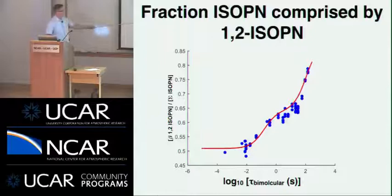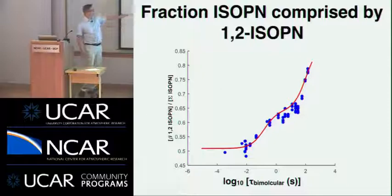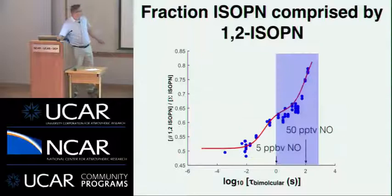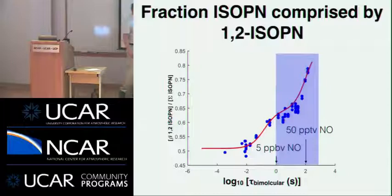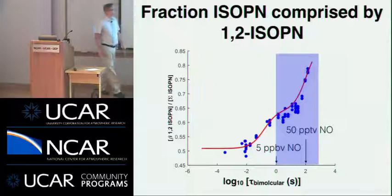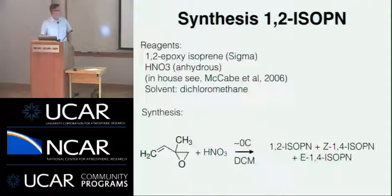This data from the RO2 experiments shows the fraction of the beta-1,2 isoprene nitrate over the total as a function of RO2 lifetime. In the atmosphere, we're living in the region where the beta-1,2 isoprene nitrate is always a large fraction — more than 65% of the isoprene nitrates being made — and at the long end it's up to 80 or 90%. So if we're going to study one of these isoprene nitrates, this would be the one to look into first because it's the most important.